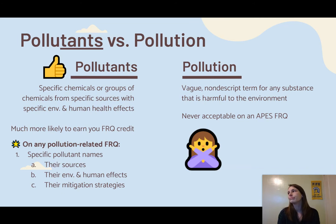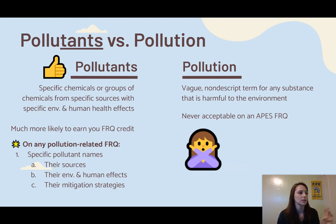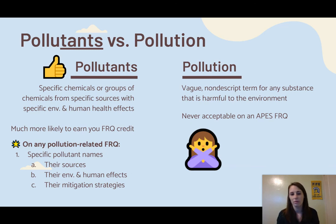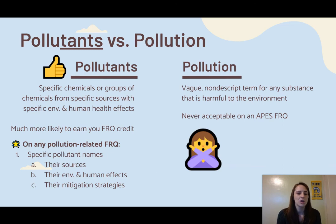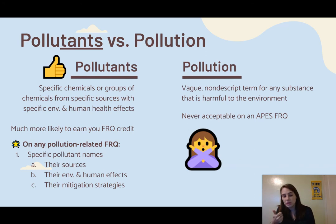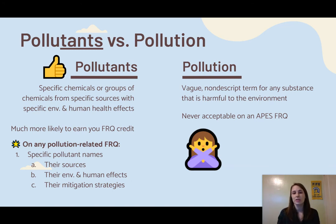So if you say power plants release pollution into the atmosphere, you need to be very specific — they release sulfur dioxide, they release particulate matter, they release NOx. You need to be specific. Don't just say pollution; you won't ever earn points for that on the FRQ — it's way too vague. So if you are talking about a pollution-related FRQ, make sure you're very specific about the pollutant's name, their sources, their environmental and human effects, and their mitigation strategies. Those are the things you're going to want to be aware of with the specific pollution you're referencing.